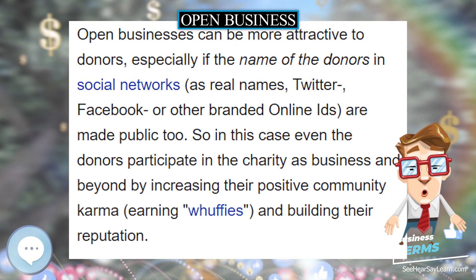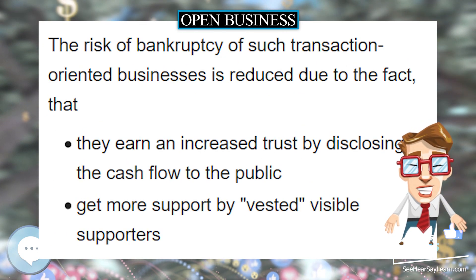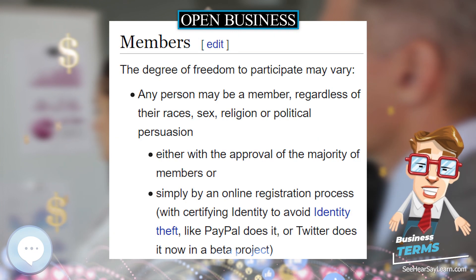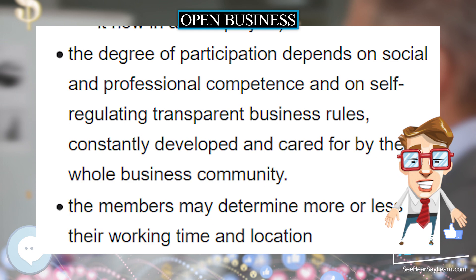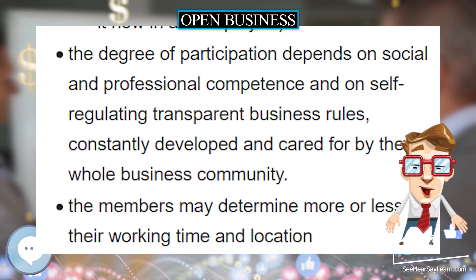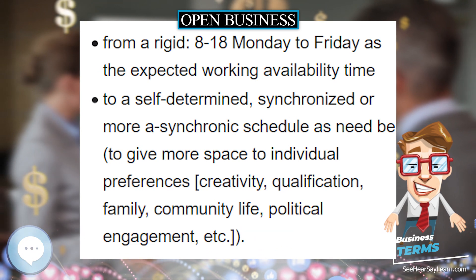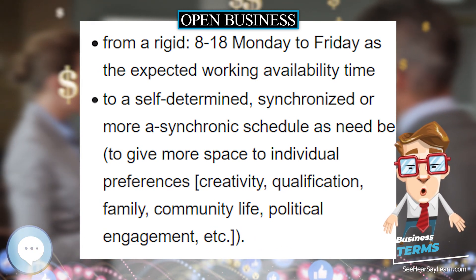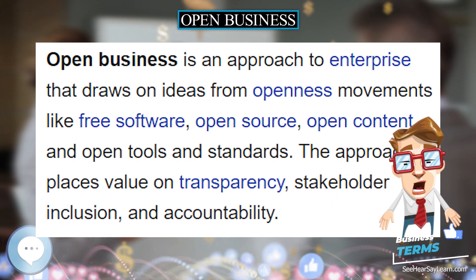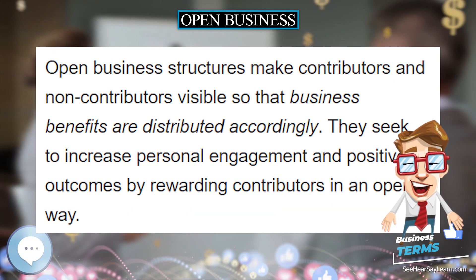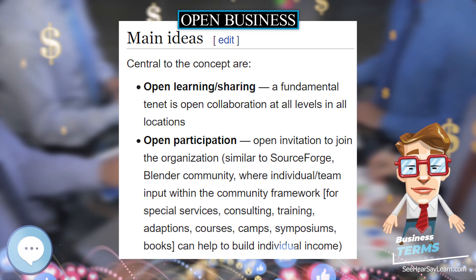A service-oriented business can also operate in open ways. A business that documents all transactions, donations, and use of donated money in real time on their websites in public is very open. Another example might be Canonical Limited. Open businesses can be more attractive to donors, especially if the names of donors in social networks — as real names, Twitter, Facebook, or other branded online IDs — are made public.